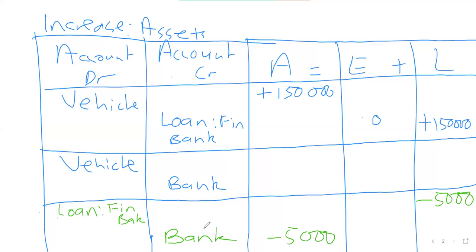Bank is involved because money is going out of your account to pay for the loan. Anytime money goes out or comes in, bank is involved. Paying the loan will minus your assets by 5,000. On the liability side, the 150,000 is reduced to 145,000 — it's being reduced by that installment of 5,000.